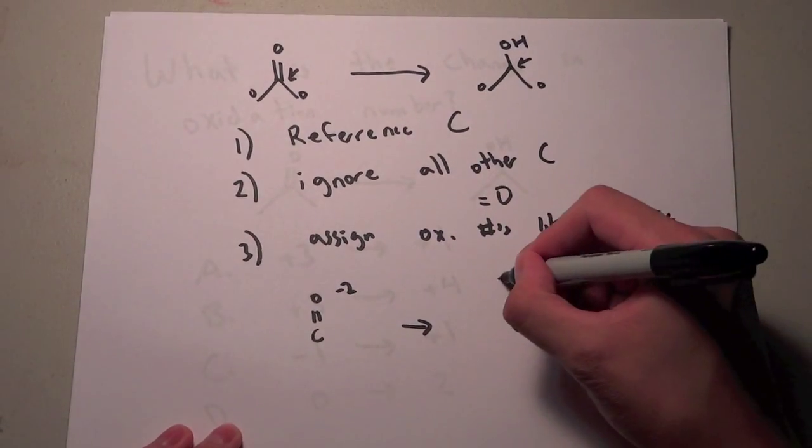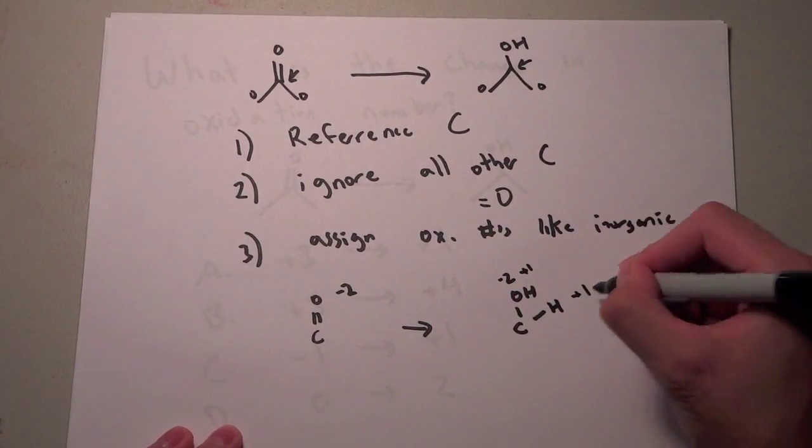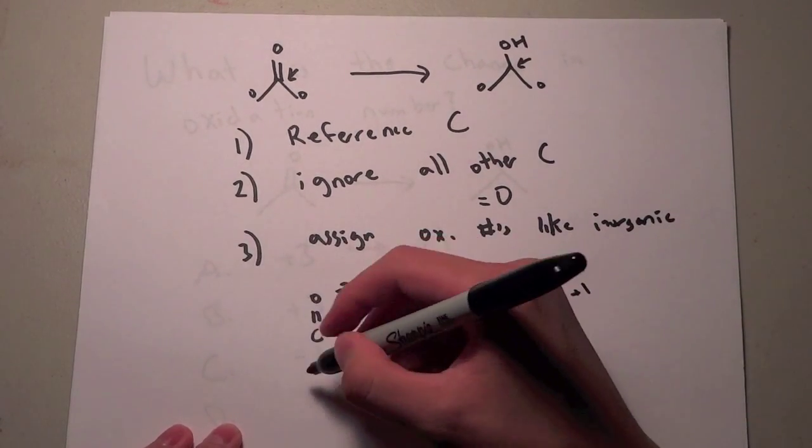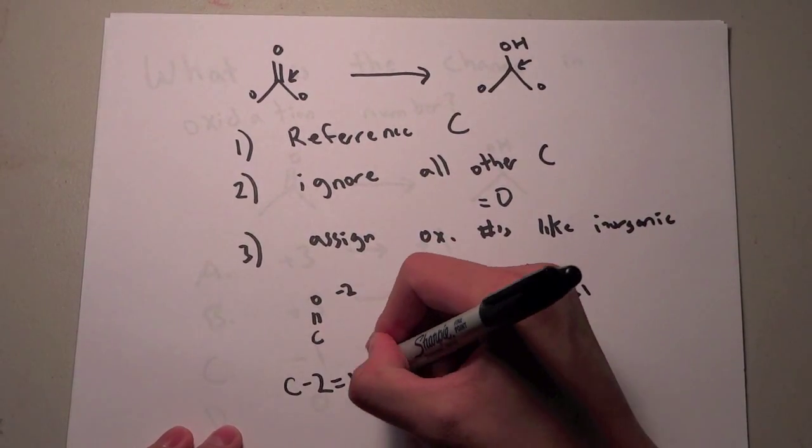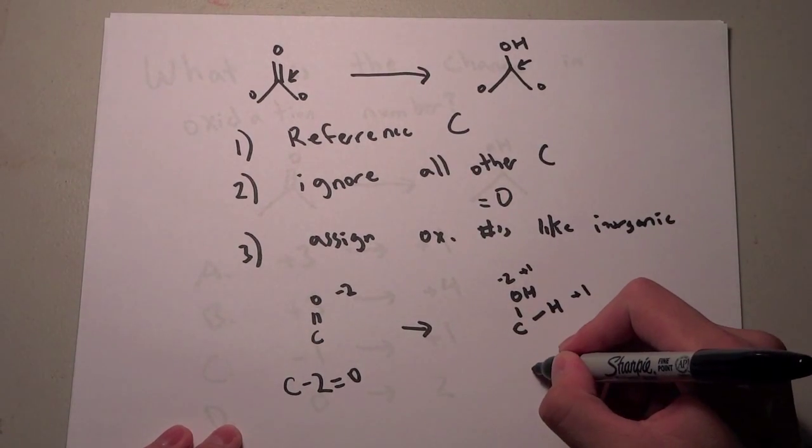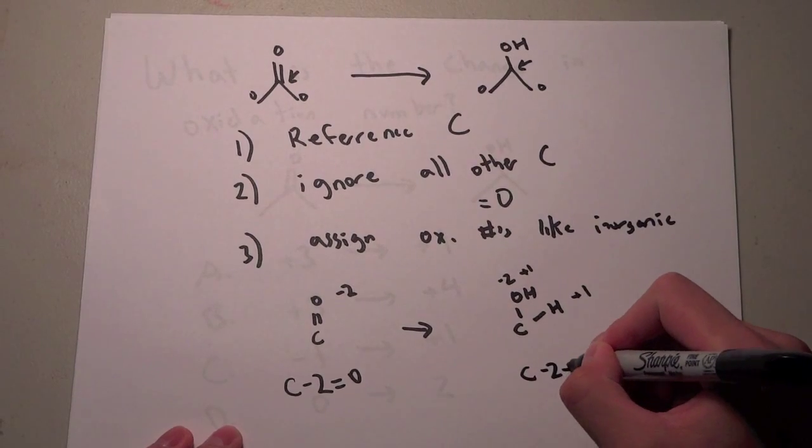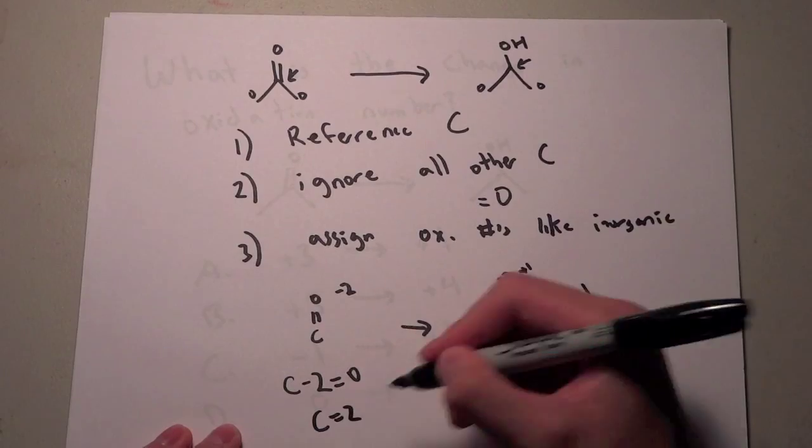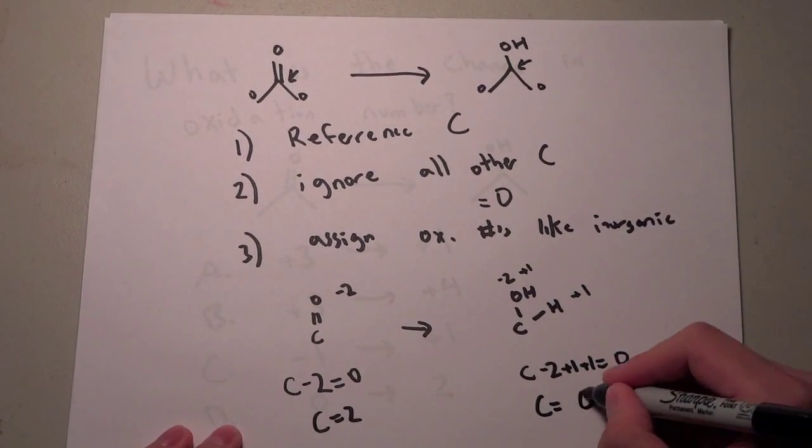So this is minus 2, minus 2, plus 1, plus 1. So in this case, we set it equal to zero again because there is no charge, there is no charge on this CO. The whole thing is neutral. And same thing with this side, C minus 2, plus 1, plus 1, equals 0. And if we solve this, we get C equals 2 and C equals 0.